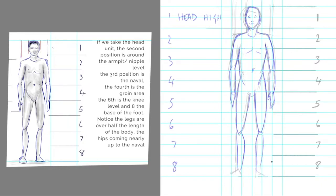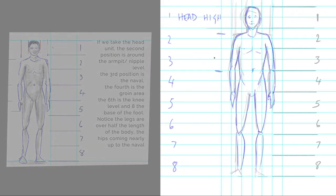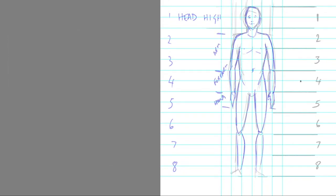Just to recap, we've got eight heads for the height of the body, and then from the arm to the forearm and the size of the hand.